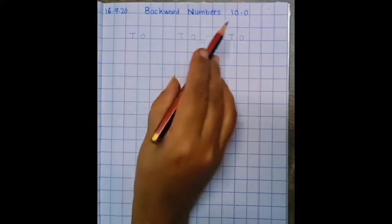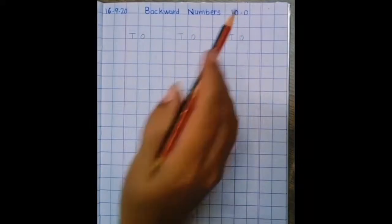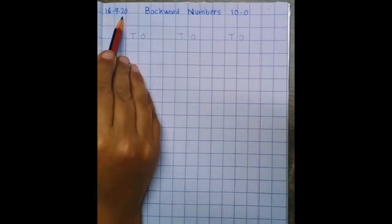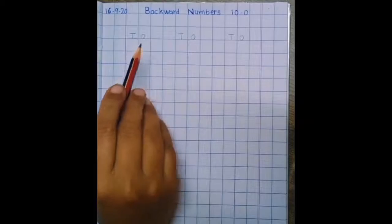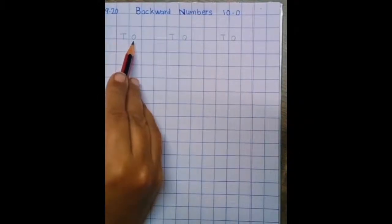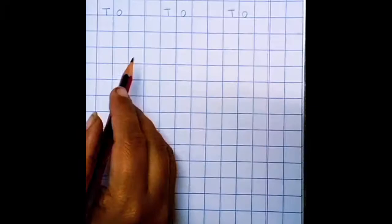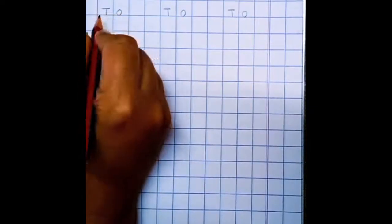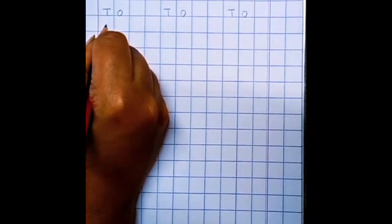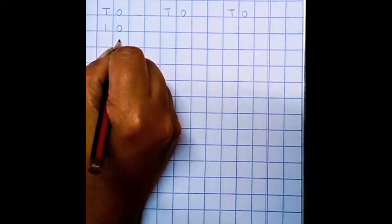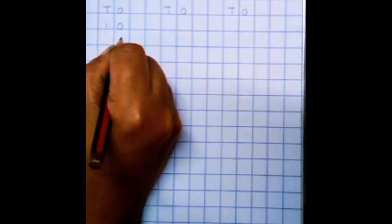Backward numbers 10 to 0. Today's date 16.9.2020. T means tens. O means ones. Now in backward numbers, first we have to write 10. 1 below T and 0 below O.